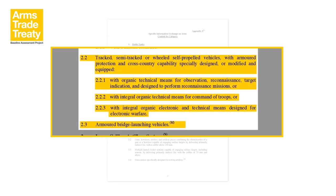The armoured combat vehicles category in the Wassenaar Arrangement's specific information exchange on arms also includes tracked, semi-tracked or wheeled self-propelled vehicles with armoured protection and cross-country capability specially designed or modified and equipped with organic technical means for observation, reconnaissance, target indication, and designed to perform reconnaissance missions or for command of troops or for electronic warfare and armoured bridge launching vehicles. Participating states of the Wassenaar Arrangement as well as ATT states parties could use this description for the collection and reporting of information on international transfers of armoured combat vehicles.